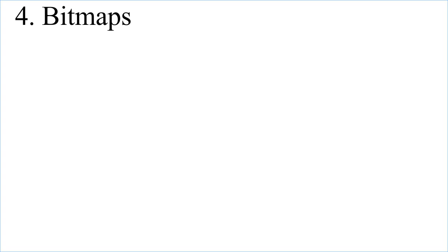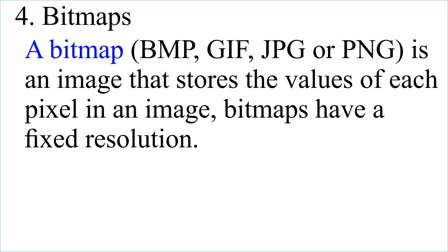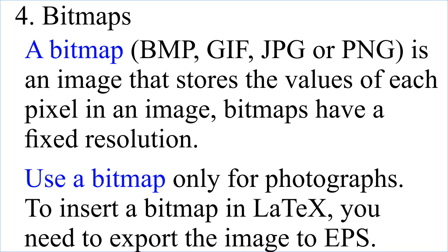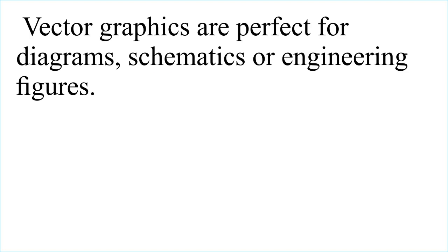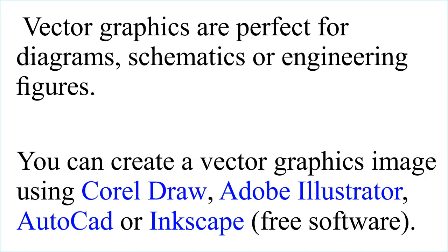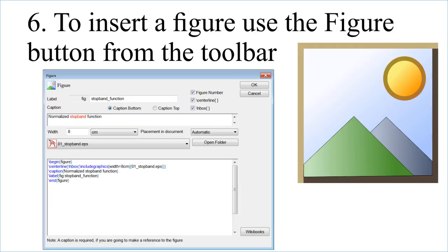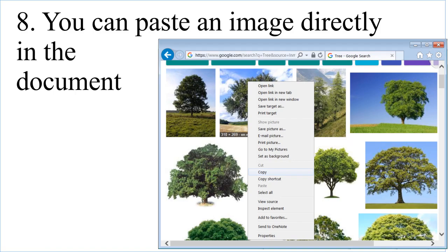A bitmap is an image that stores the values of each pixel. Bitmaps have a fixed resolution — use a bitmap only for photographs. To insert a bitmap in LaTeX, you need to export the image to EPS. A vector graphics image is stored as a sequence of commands, such as EPS, SVG, CDR, or EMF. Vector graphics are perfect for diagrams, schematics, or engineering figures. You can create vector graphics using CorelDRAW, Adobe Illustrator, AutoCAD, or Inkscape. To insert a figure, use the Figure button from the toolbar. You can also paste an image directly into the document.